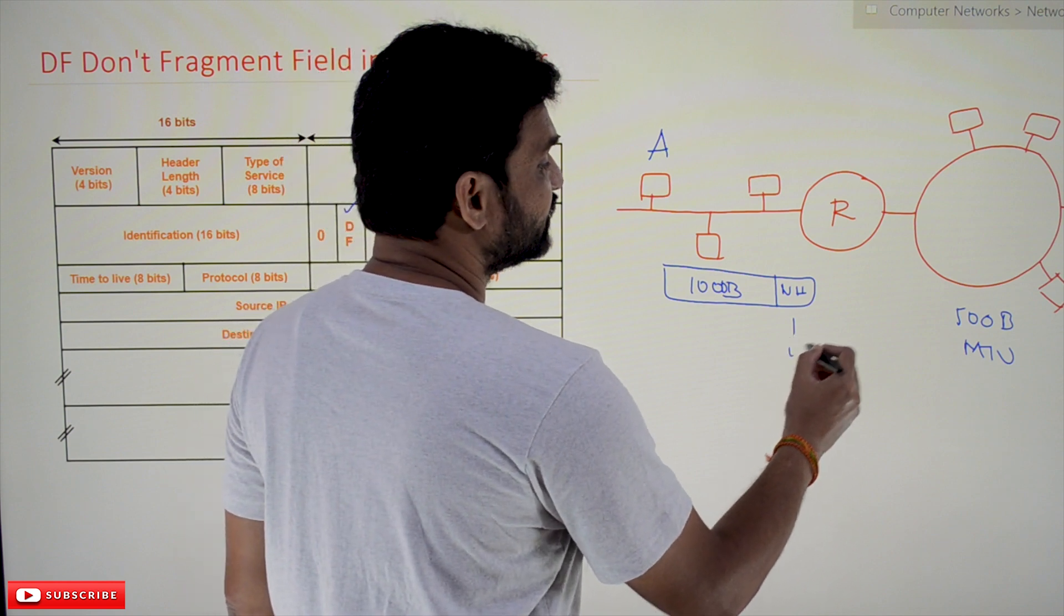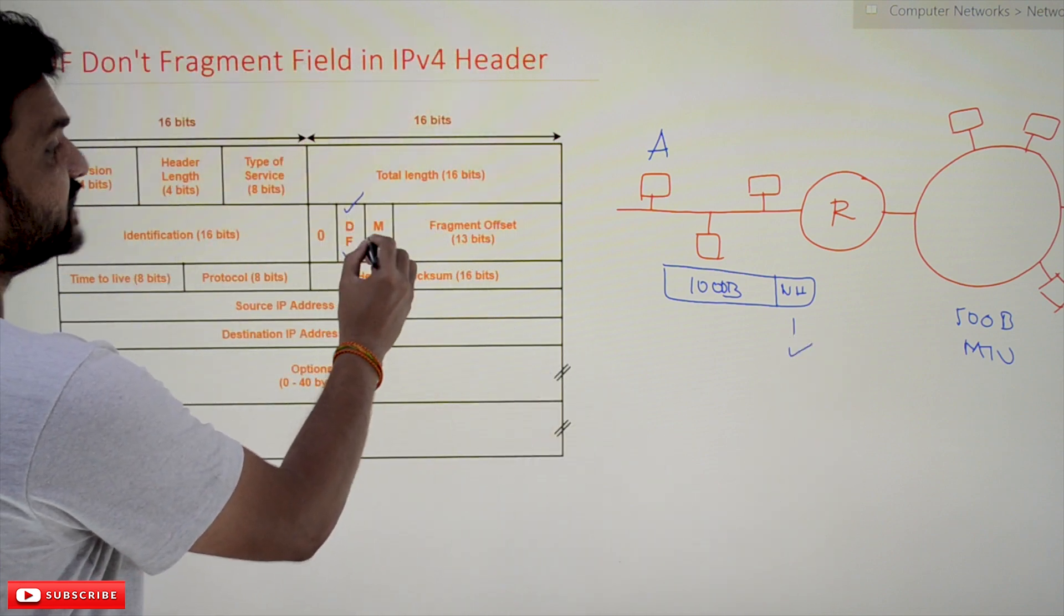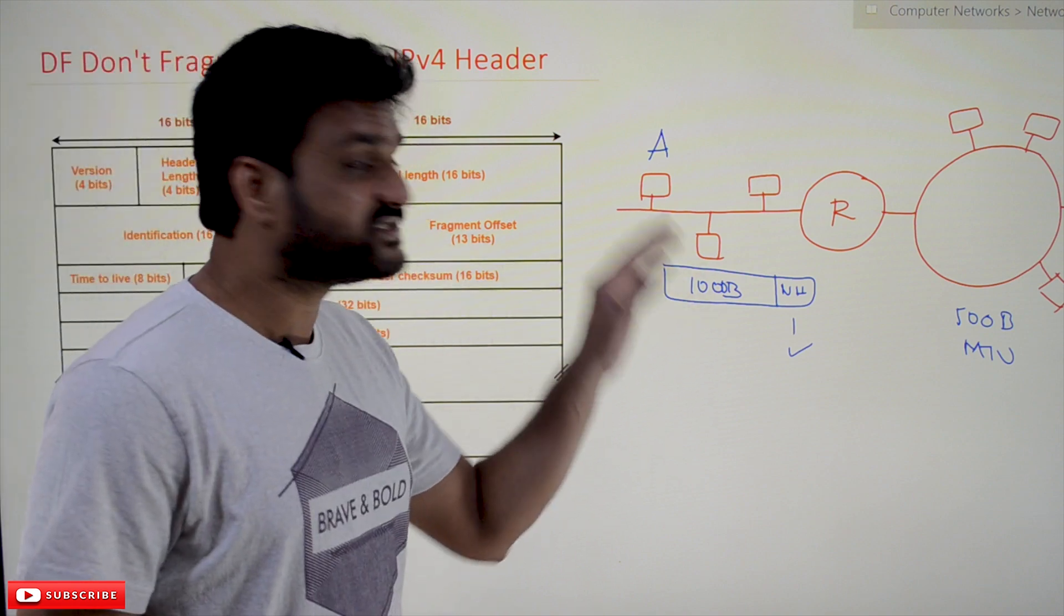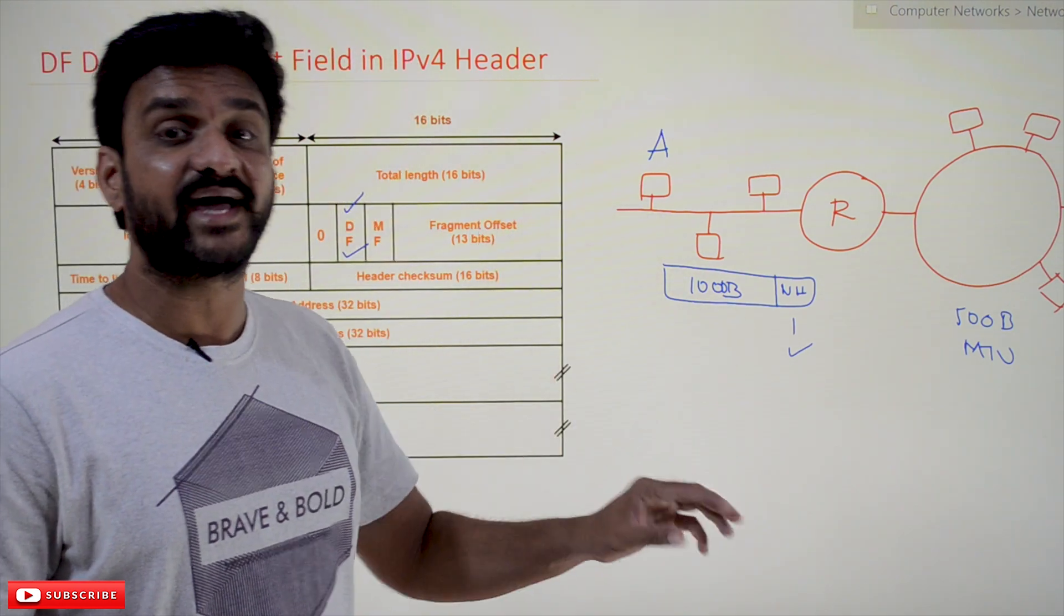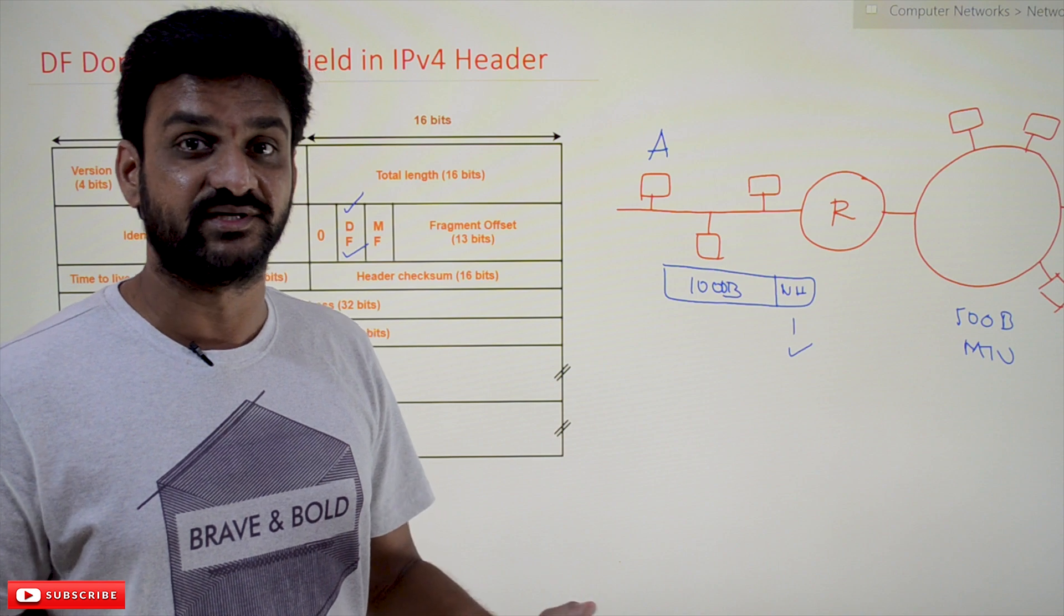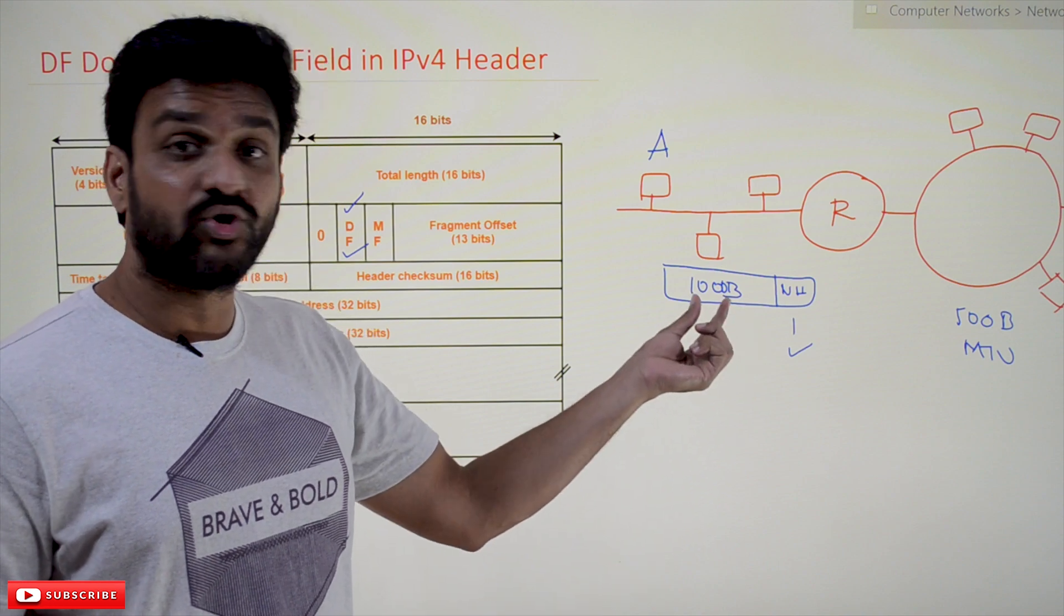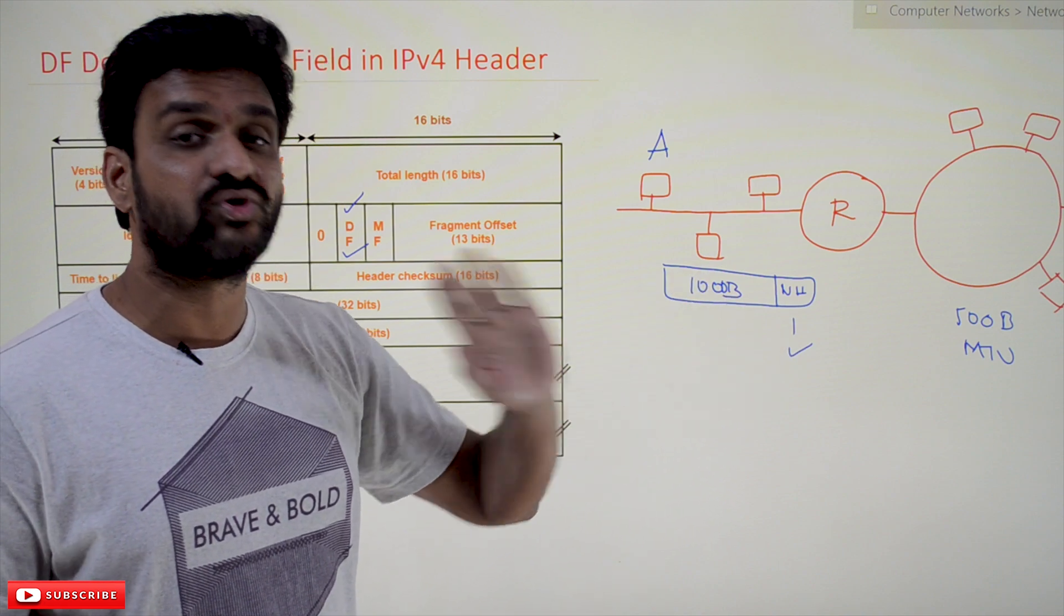If the DF is set to one, it means that the sender doesn't want this packet to be divided into fragments. So the Don't Fragment flag states: don't divide this into fragments.